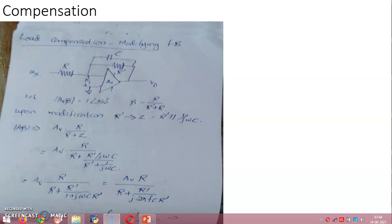In the third category of compensation, referred to as lead compensation, we just place a capacitor parallel to the feedback resistance. In the absence of this capacitor, the feedback was performed by the potential divider R and R prime. Here also, we take the configuration as inverting amplifier configuration.